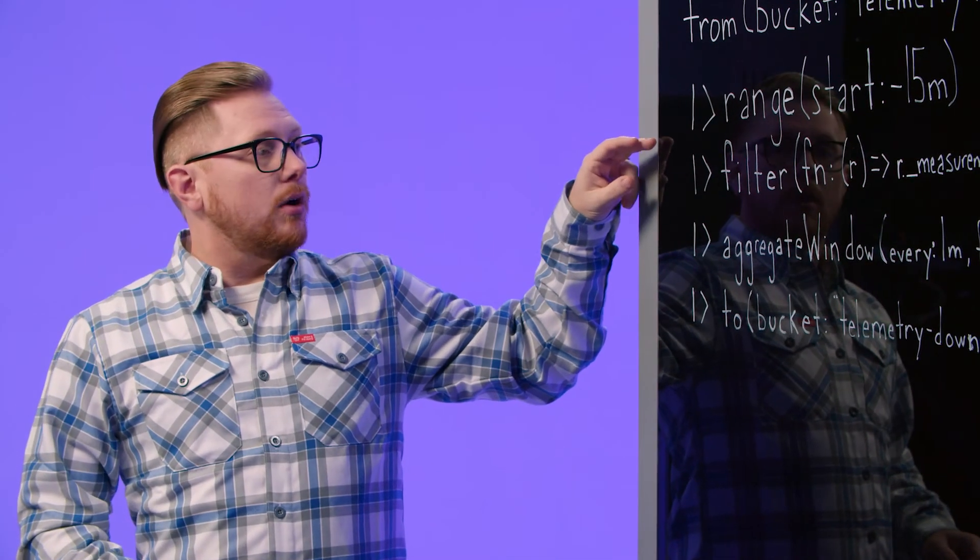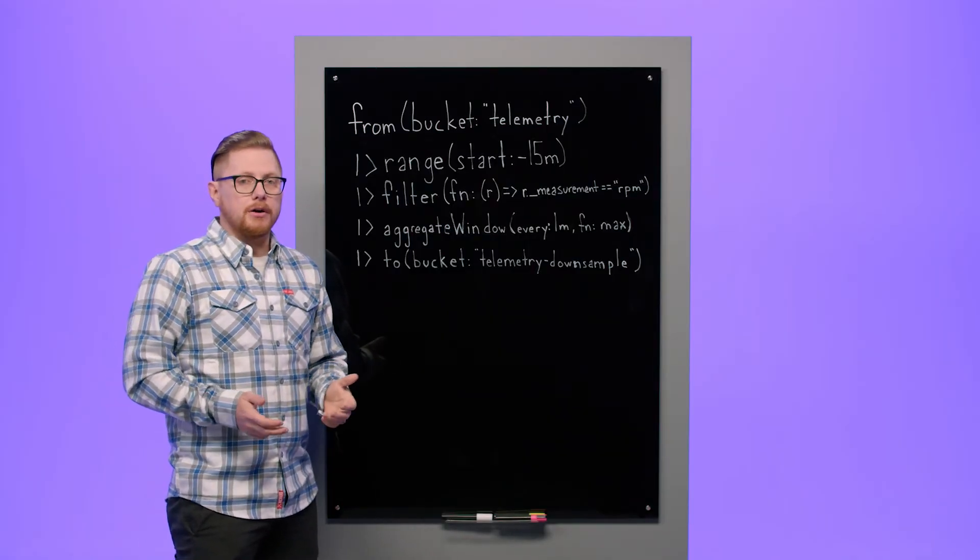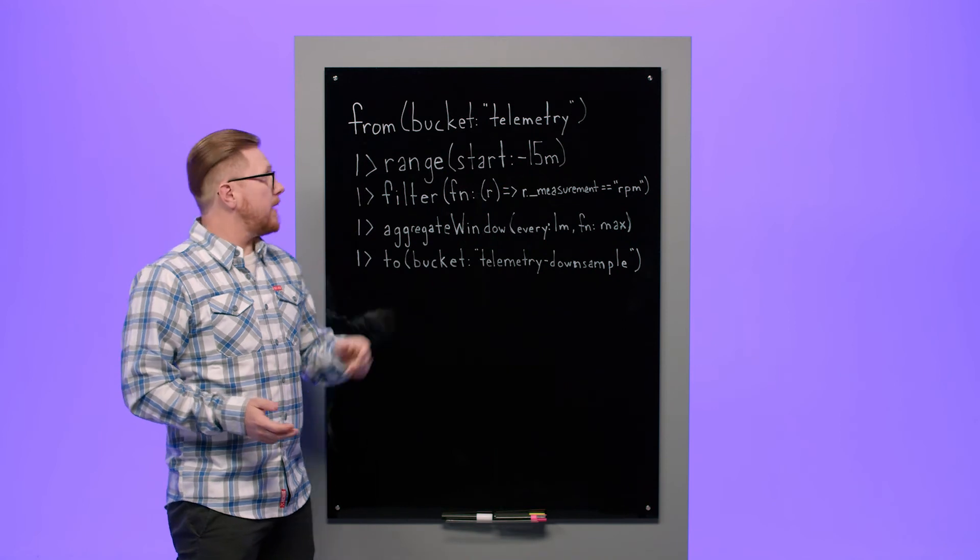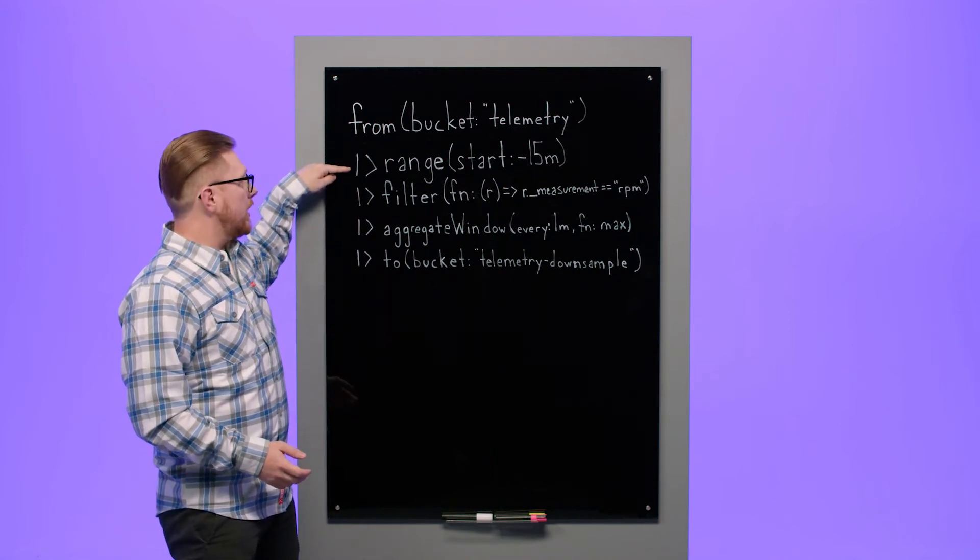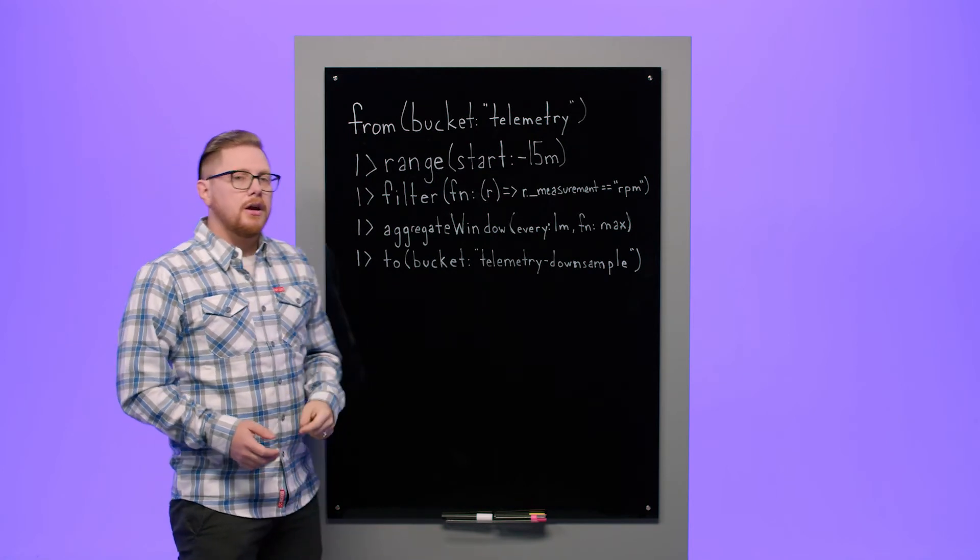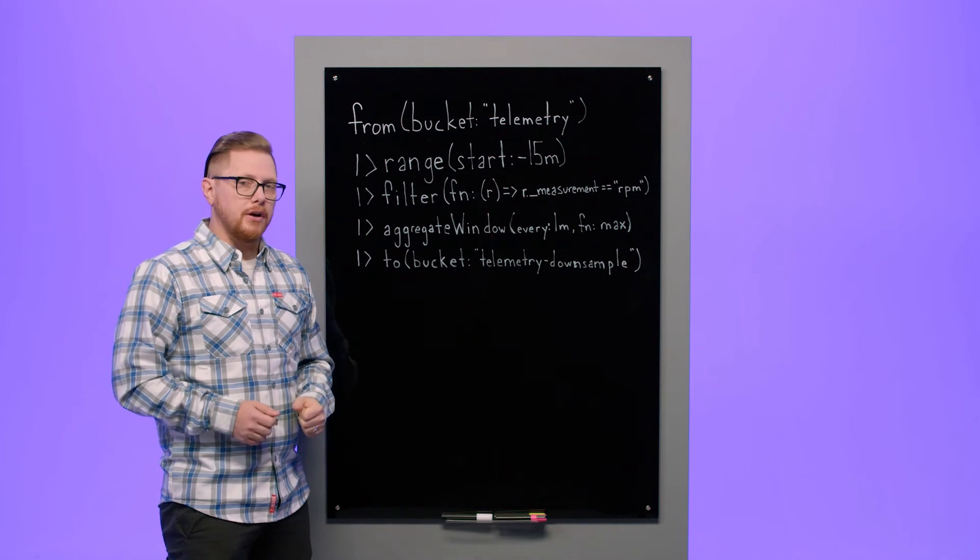You may look at this query now and ask, what's this operator? This is the operator that we call the pipe operator. It would signify that we're passing tables from the from function through the pipeline to the range and filter functions. The pipe operator will be the most common operator that you'll use inside of Flux.